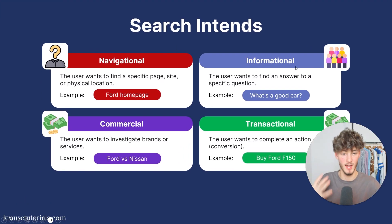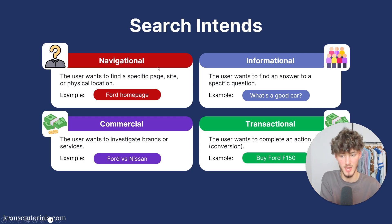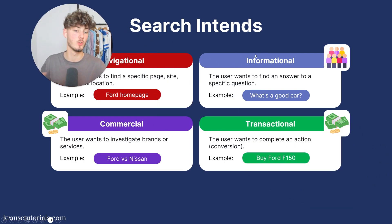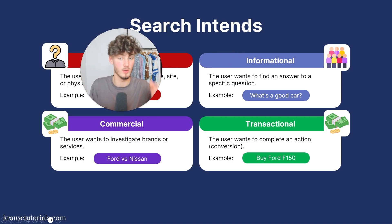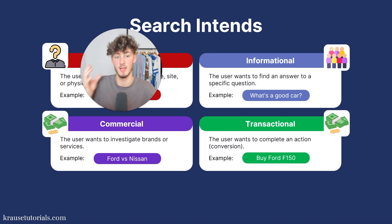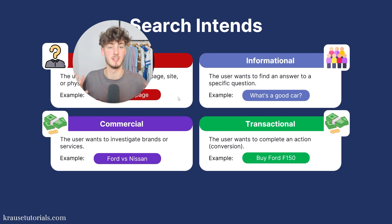Let's now go over all of the other search intents. We already covered navigational ones — navigational keywords are where the user wants to find a specific page, site, or physical location, and we don't want to target these. As for informational keywords, these are search inquiries where the user wants to find an answer to a specific question. Usually, informational search intents are going to have a rather high search volume, because a lot of people are going to have the same problems.